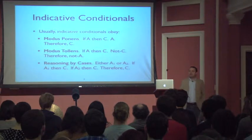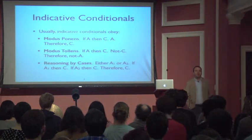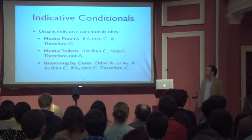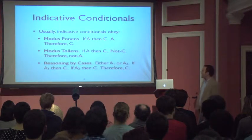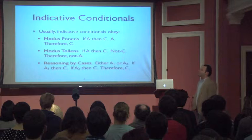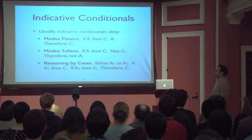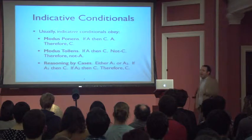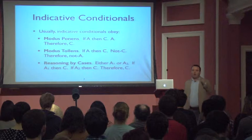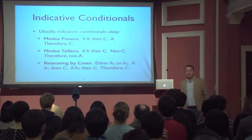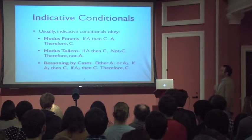Usually, indicative conditionals obey a number of different principles or rules of logic. I have three of them up on the slide — not because they're the only ones, but because they are particularly important and widely used rules that most conditionals seem to obey. They seem to obey modus ponens: if A is true, then C is true; A; therefore C. So you know that if there's food in the next room, there will be a lot of people there. And you also know there's food in the next room, and it seems like you can infer that there will be a lot of people there. That's called modus ponens, or the mode of putting.